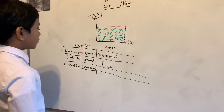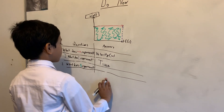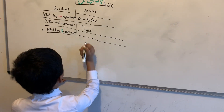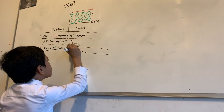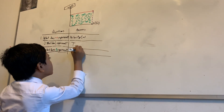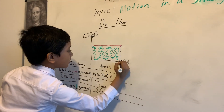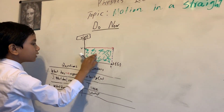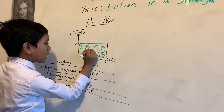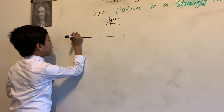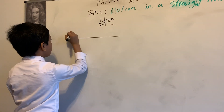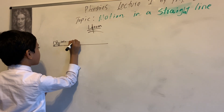And number three: what does the green represent? The green is the area between v and t. The area in the middle should be distance. Time times velocity in the middle should be distance. Now imagine you're in a car on the road and you have a constant velocity of 10 meters per second.